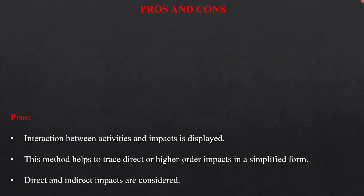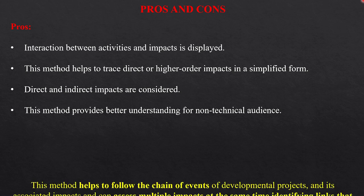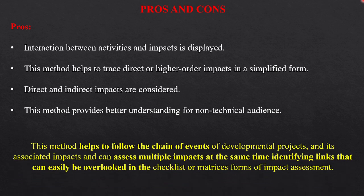Like every other method, it has also some advantages and disadvantages. The advantages are the interaction between activities and impacts is displayed. This method helps to trace direct or higher-order impacts in a simplified form. Direct and indirect impacts are considered. And this method provides better understanding for non-technical audience. This method helps to follow the chain of events of development projects and its associated impacts. And can assess multiple impacts at the same time identifying links that can be easily overlooked in the checklist or matrix form of impact assessment.